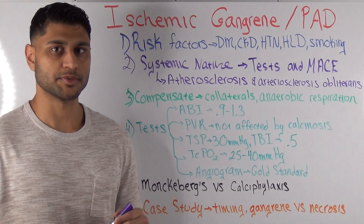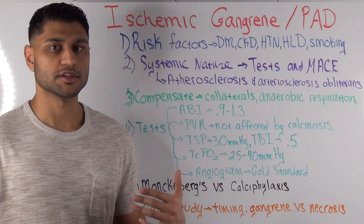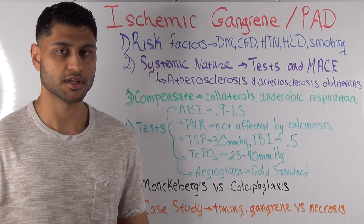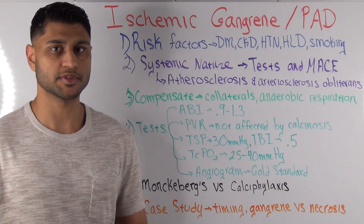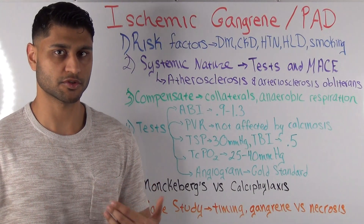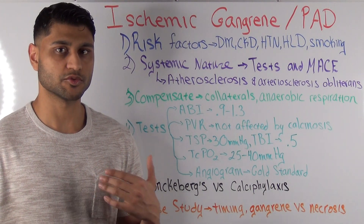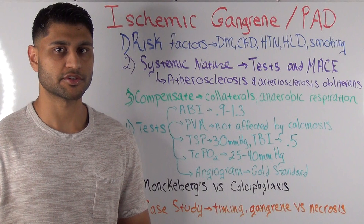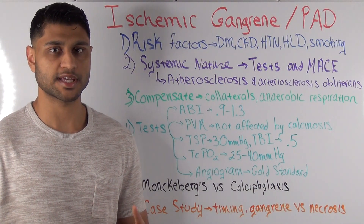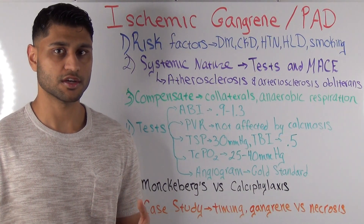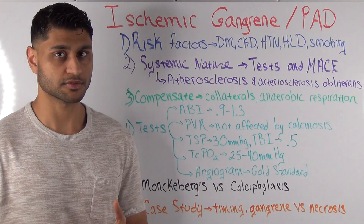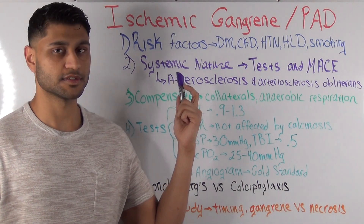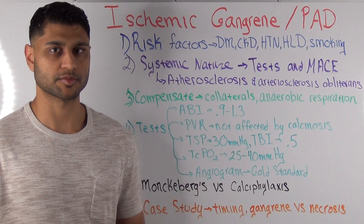When you think about patients with PAD in the lower extremities, you think about intermittent claudication or ischemic rest pain — that's true for the lower extremity. But the equivalent in the heart is angina pectoris, and the equivalent in the brain is a TIA, or transient ischemic attack. A history of TIA, angina pectoris, or intermittent claudication all reflect the fact that atherosclerosis is a systemic process.